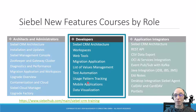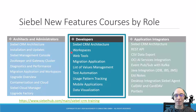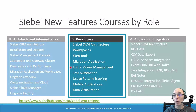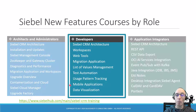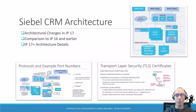In the developers training we have a lot of things to cover. It's important to understand the modern Siebel CRM architecture, so we start with that. It's even more important to understand workspaces and web tools, and of course the migration application, which migrates what you develop from development to test or production. We also talk in depth about list of values management and workspace application data. Test automation is a vital chapter, and we also introduce usage pattern tracking, mobile applications, and the relatively new data visualization options.